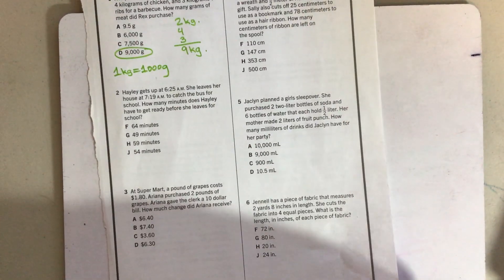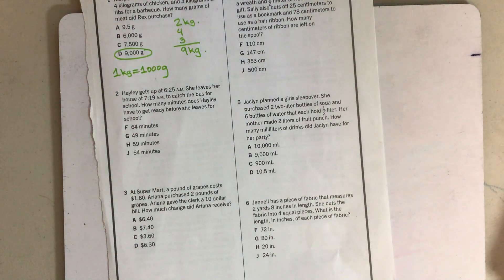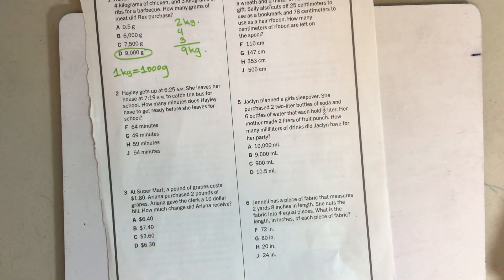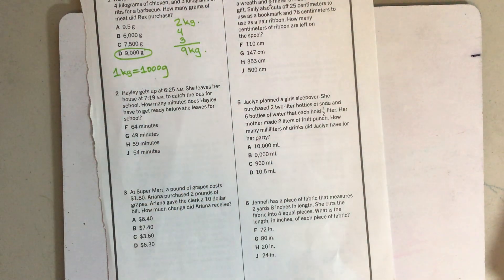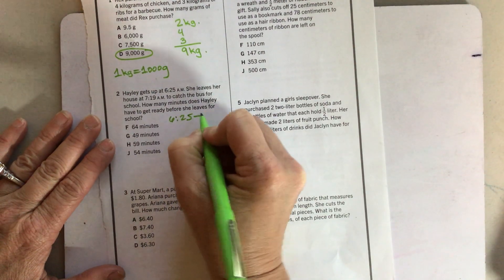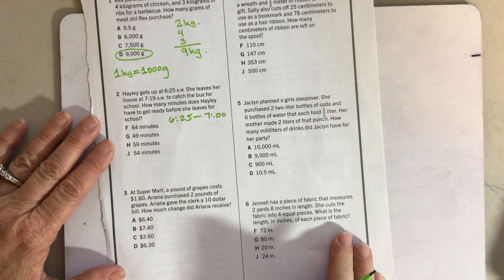Let's look at number two. Haley gets up at 625 AM. She leaves her house at 719 to catch the bus for school. How many minutes does Haley have to get ready before she leaves for school? I actually think this one is not really all that hard. Do me a favor and pause your video and see how much time she has to get ready in the morning and pause that video now, please.